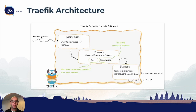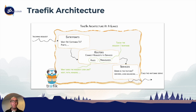We have an incoming request coming to an entry point, so traffic is monitoring the entry points for any incoming requests. Think of an entry point as a port — a simple port that's exposed by traffic. That means port 80, port 443, port 8080 for the dashboard, or additional ports like databases or any other services that you want to publish through the entry point.